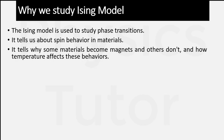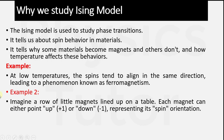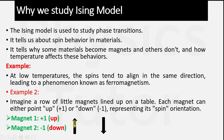Third, the Ising Model tells us why some materials become magnets and others don't, and how temperature affects this behavior. At low temperature, spins tend to align in the same direction, leading to a phenomenon known as ferromagnetism. In ferromagnetic substances, alignment is very pure and proper. But with increasing temperature, this alignment changes — which we will see further in domain theory. Positive one shows upward spin motion and negative one shows downward spin motion.